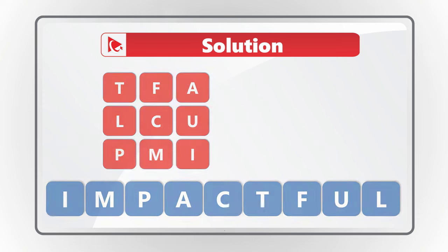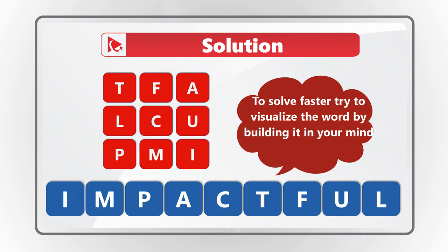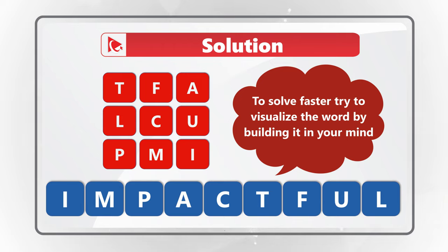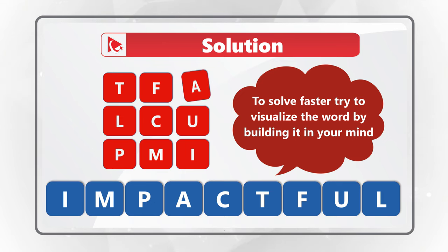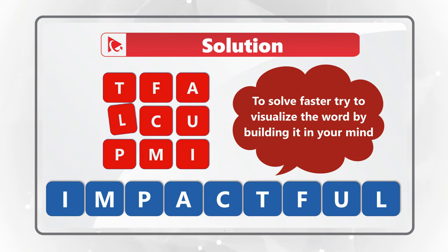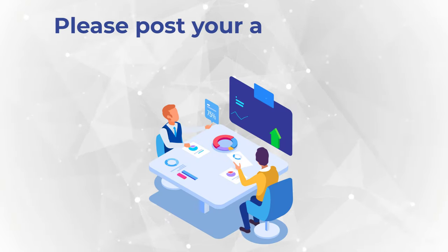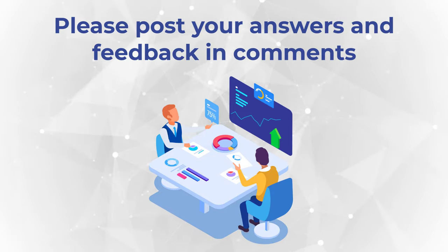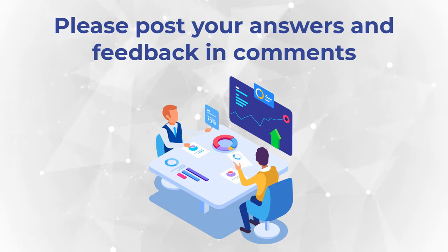I get a lot of questions on how to solve these types of challenges. The best way I found is when looking at the letters, try to draw lines connecting them to see if you can come up with the word. In this case, letters next to each other in the real world are also next to each other in this test question. So if we connect I-M-P-A-C-T-F-U-L, you get to the correct solution. Do you have a better way to solve it? Please make sure to share in comments so we can all learn.